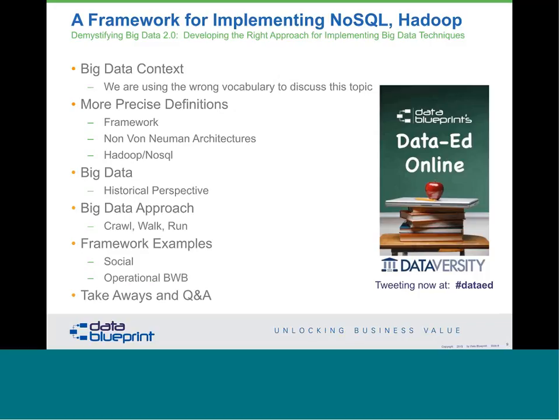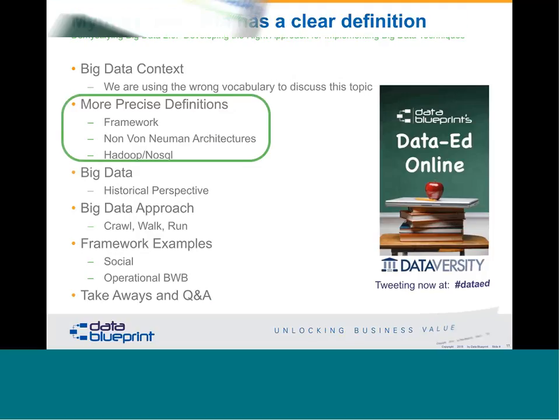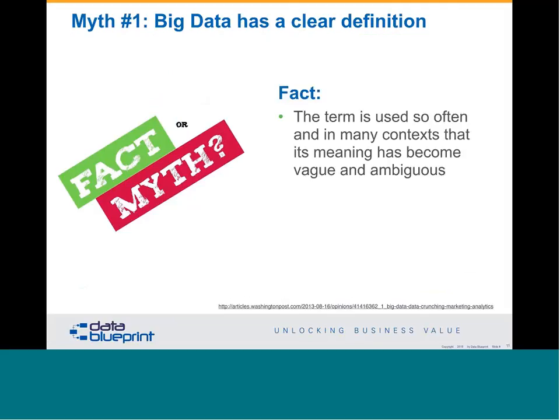The first piece is that we are simply using the wrong vocabulary to describe these topics. Big data has a clear definition — fact or myth? It's a myth. The fact is that the term is used in so many different contexts its meaning has become ambiguous. It's become a buzzword in the industry — somebody can say 'big data' but you don't really know if they're talking about Hadoop, NoSQL, or other different types of platforms. People often disagree as to what the term actually means.